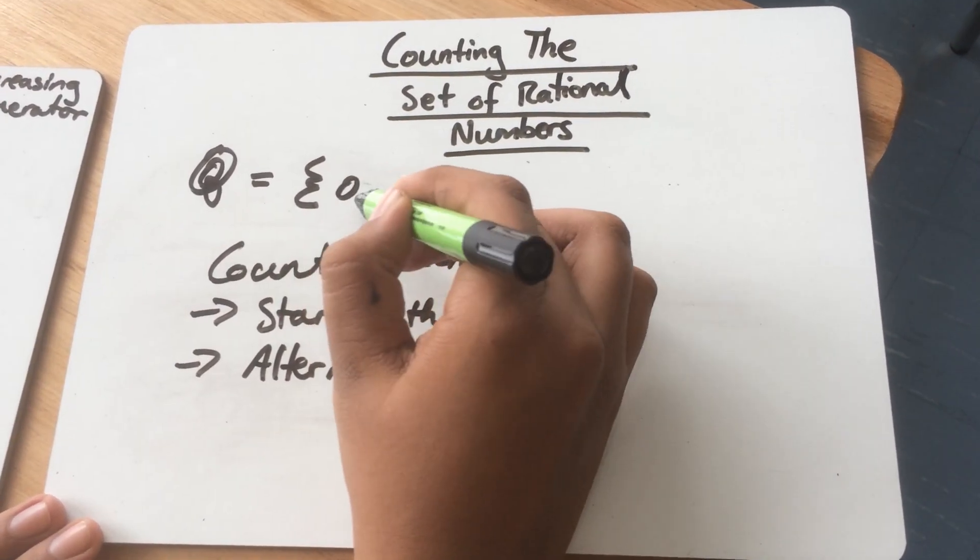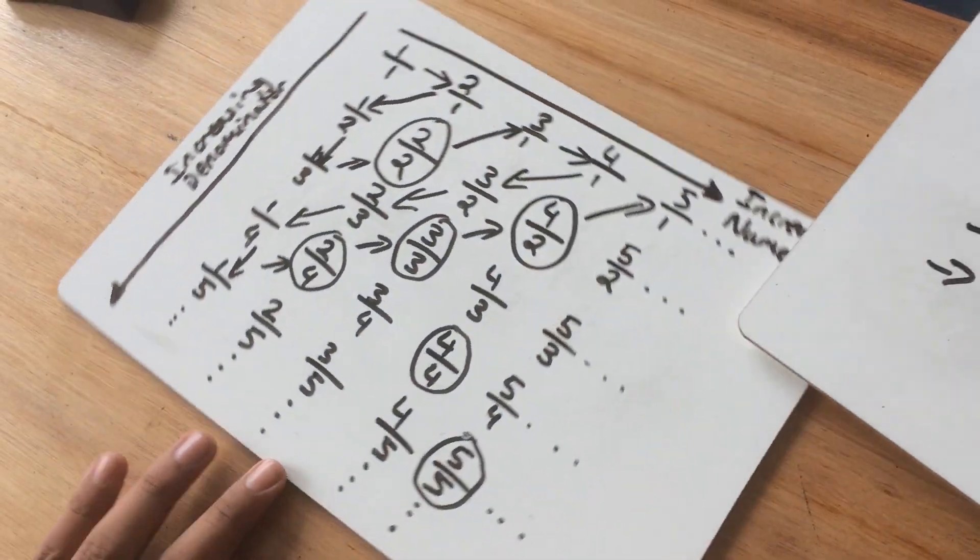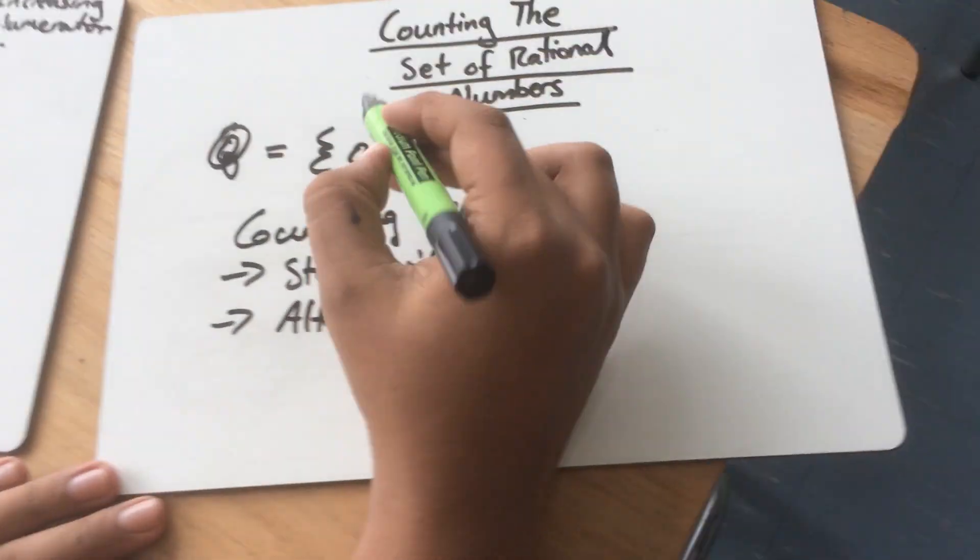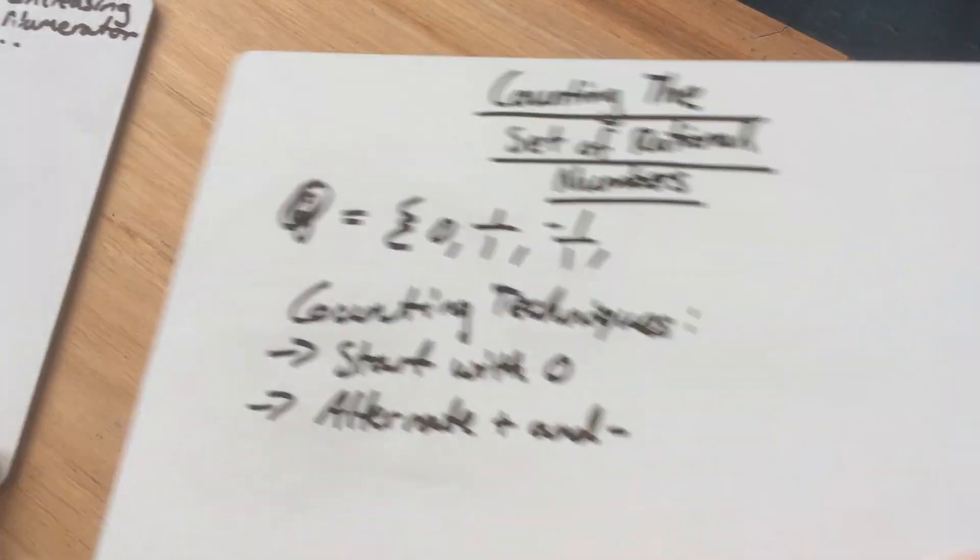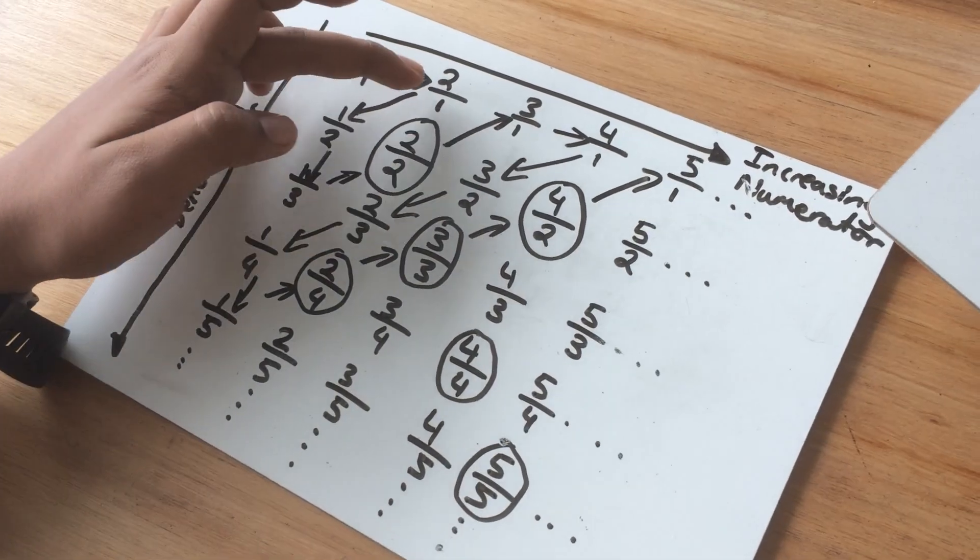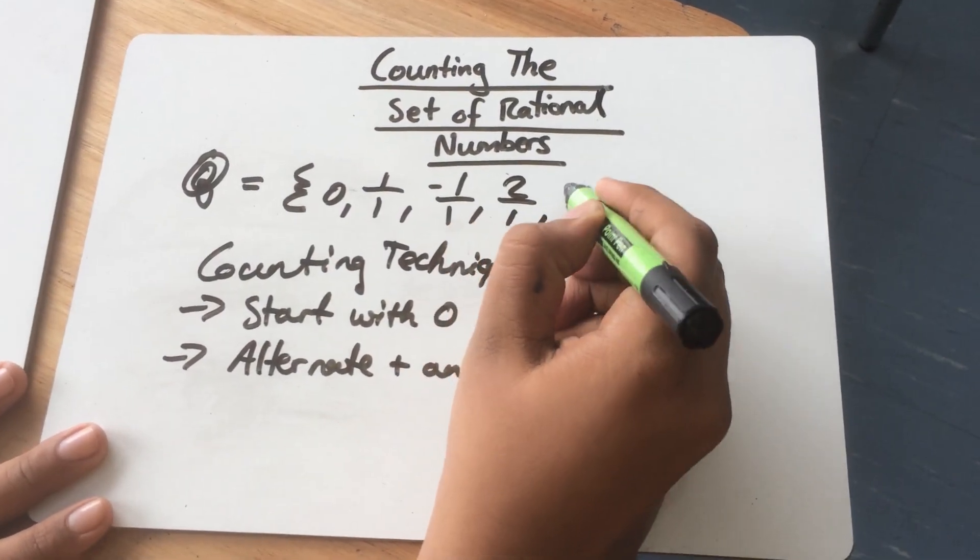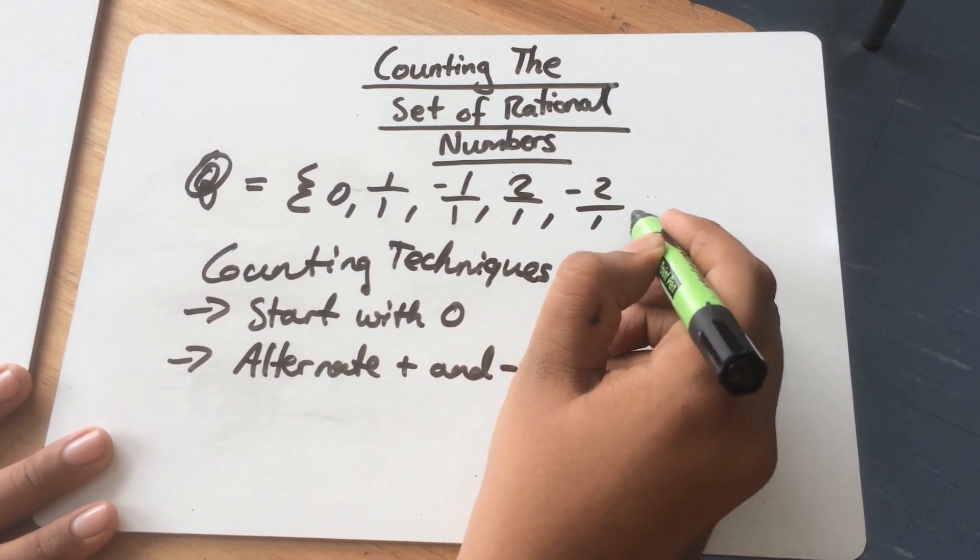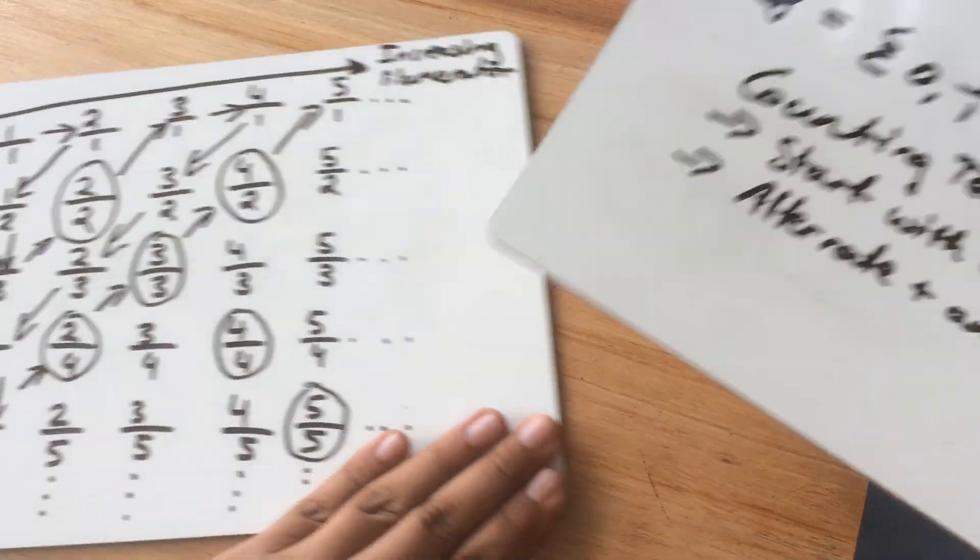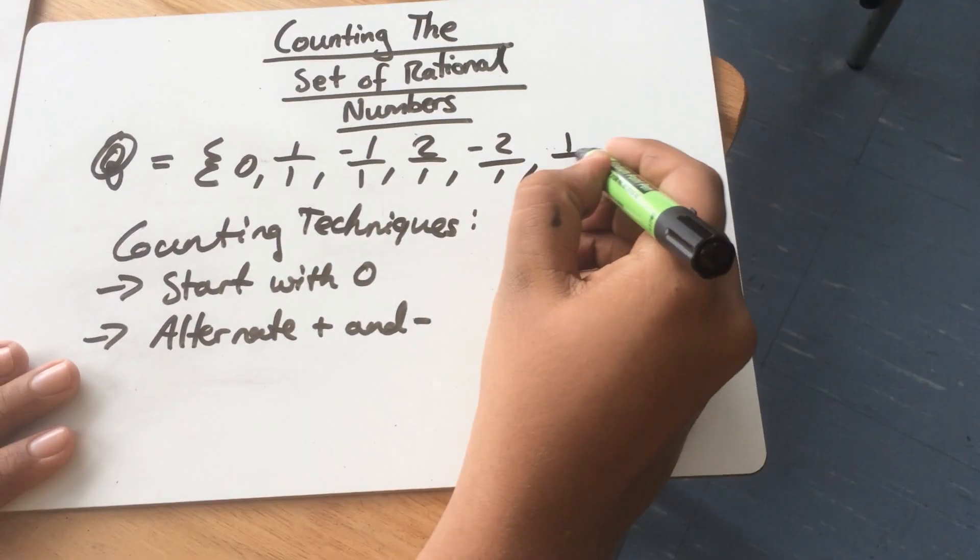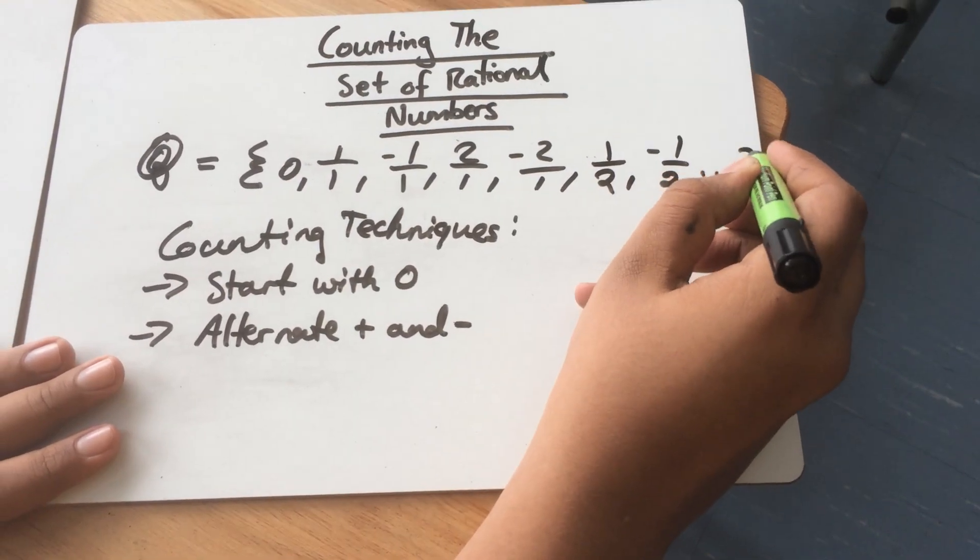And so we use the same techniques to count the rational numbers. We start with 0. And then since our first number is 1 over 1, we write that here. 1 over 1. Then we put its negative counterpart. Then we go to the next element, which is 2 over 1. So then we place 2 over 1 and its counterpart, negative 2 over 1. And then the same. We have 1 half is next. So we write 1 half and negative 1 half. And so on.